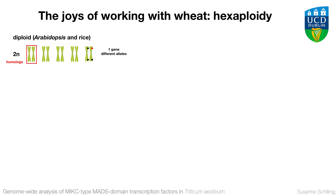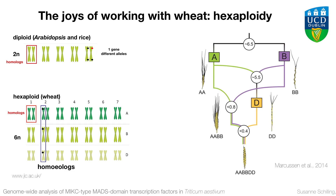Other people would work with diploid species, where you have maybe different alleles for one gene and you have homologous chromosomes. But when you want to characterize wheat, you're essentially dealing with three different genomes, because of the polyploidization events in the past. So basically, where you have one gene in Arabidopsis or in rice, you will have three genes in wheat — one from the A, one from the B, and one from the D genome. These three genes we would refer to as homeologs.